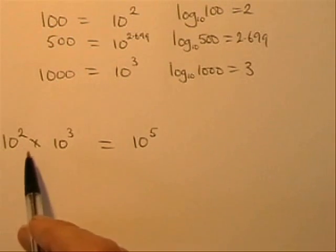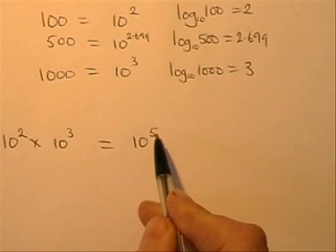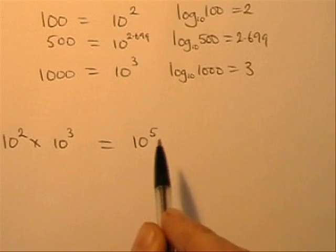So when we've got numbers written as powers and we multiply those numbers together, then what we do is we add together the powers. So that's a law that's going to be important to us in using logarithms.